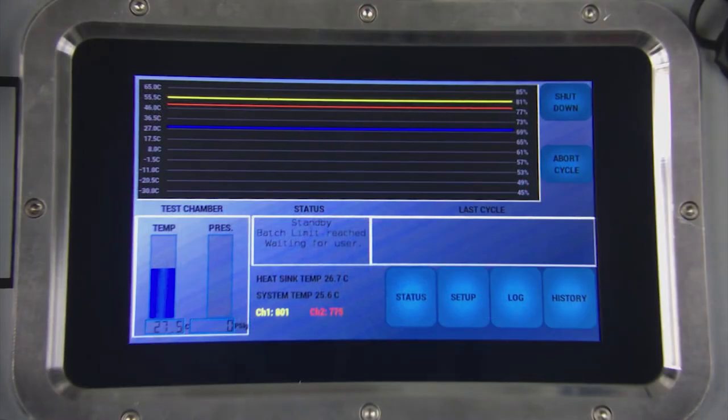The status screen is the main default screen during operation of the unit. Here you will find several areas that indicate the status of the analyzer and measurement cycles. The temperature indicator shows the current temperature of the mirror. The pressure indicator shows the pressure at the measurement cell which should match the input pressure. The status box shows the current state the analyzer is in before, during, and after measurements. It will indicate if the system is initializing, cooling down, warming up, or waiting for thresholds to be met in order to begin the next cycle. Below the status box you will find the heat sink and system temperatures as well as signal counts for detector channels 1 and 2.